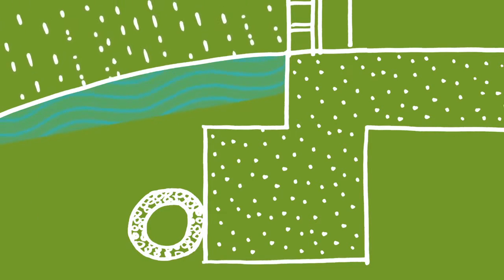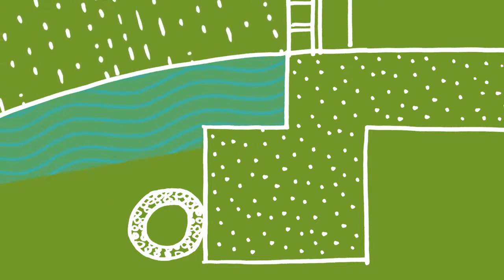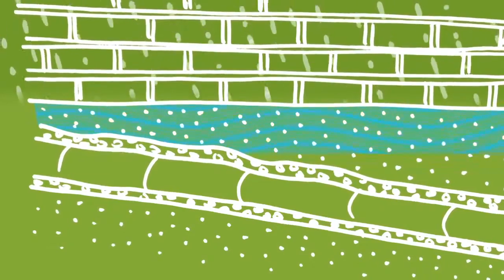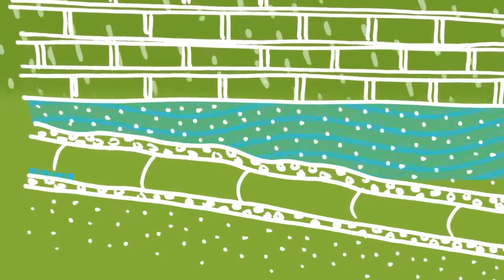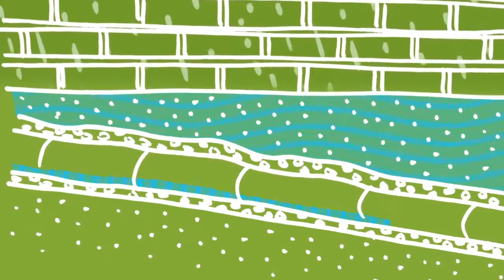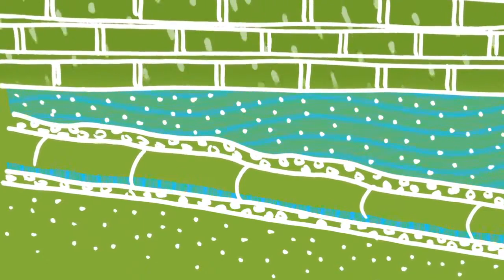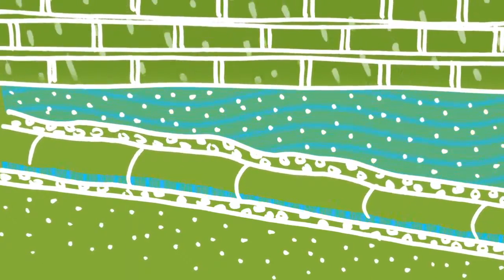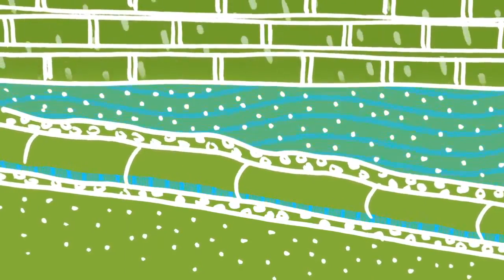Drain tile is the terminology for a porous pipe installed along a foundation. Its purpose is to provide a pathway for any water that percolates along the side of the structure. The drain tile is sloped to a lower grade to channel the water away.